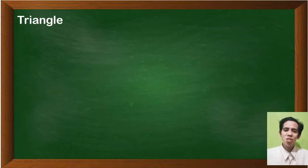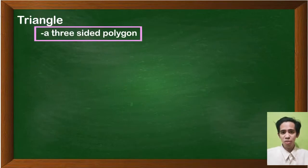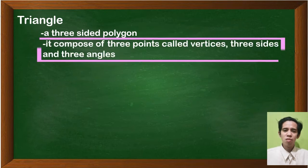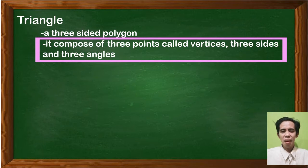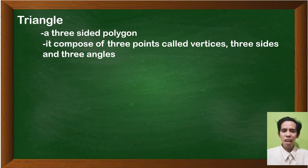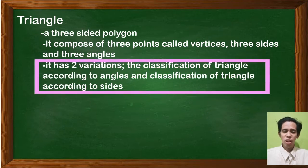A triangle is a three-sided polygon. It's composed of three points called vertices, three sides, and three angles. It has two classifications: according to angles, and according to sides.